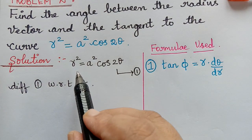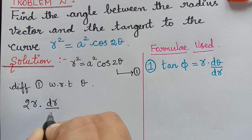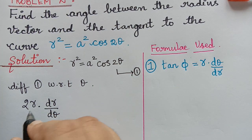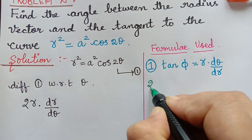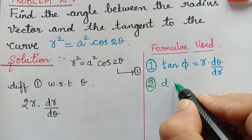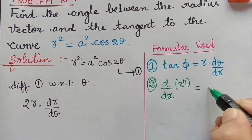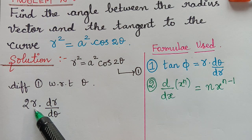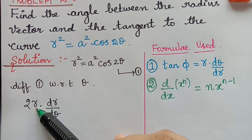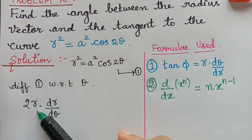Differentiating r² with respect to θ, we get 2r · (dr/dθ) by the chain rule. The second formula used here is d/dx(xⁿ) = nxⁿ⁻¹. Applying this with n = 2, differentiating r² with respect to θ gives 2r · (dr/dθ).